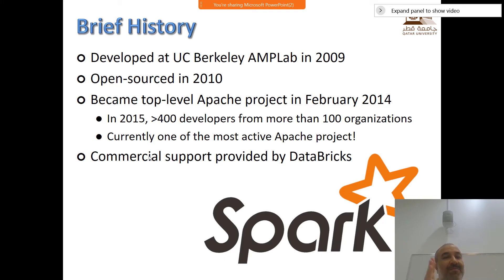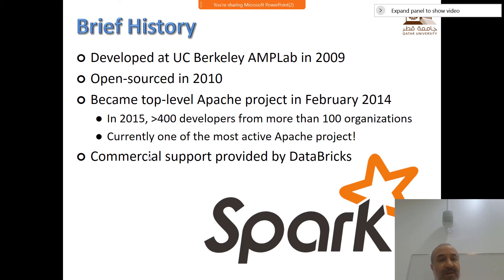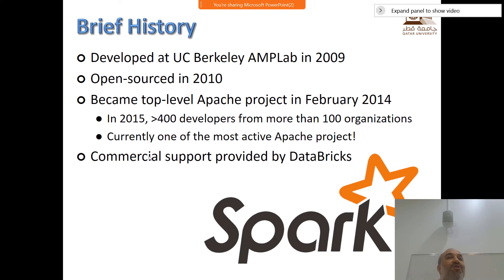A brief history: Spark was developed at UC Berkeley in 2009, open-sourced in 2010, adopted by Apache as an Apache project in 2014. In 2015 there were more than 400 developers working on Spark, and it is supported commercially by a company called Databricks, which was founded by the first author of the first Spark paper.